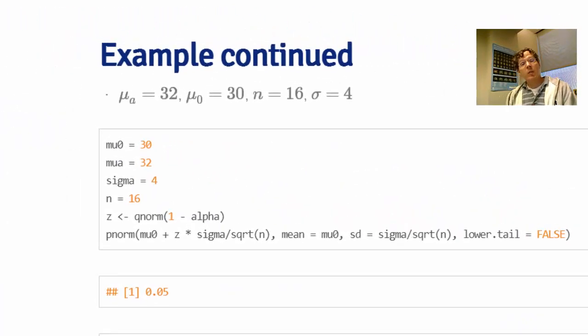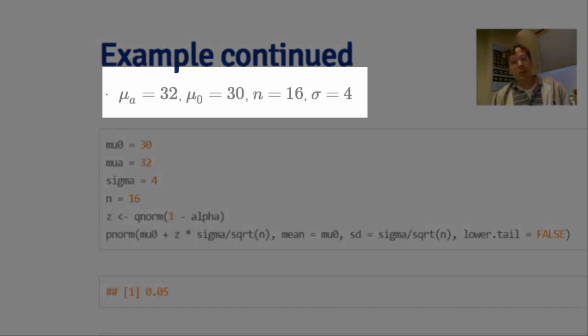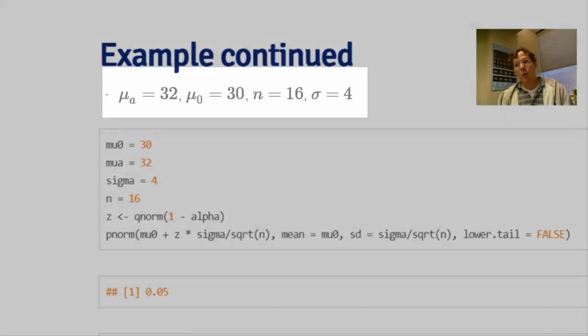So let's try it. Suppose someone were to give me this information that they wanted to conduct this study, they wanted to test whether or not mu was 30 for this population or it was larger than 30, so mu-naught equals 30. They were interested in detecting a difference as large as 32. Their n was 16 that they were hoping to get, and they knew that sigma was around 4. So here I've plugged in the values mu-naught equals 30, mu-a equals 32, sigma equals 4, n equals 16.